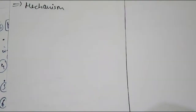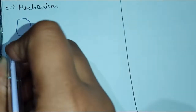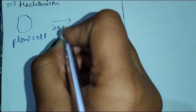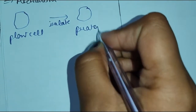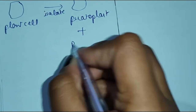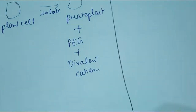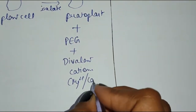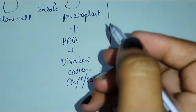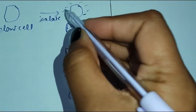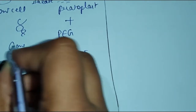Now we will talk about the mechanism of PEG. First, we have to isolate our protoplasts. We will treat them chemically with PEG along with some divalent cations. Divalent cations can be magnesium and calcium. The protoplasts are negatively charged, and so are the DNA particles — meaning our gene of interest is also negatively charged.